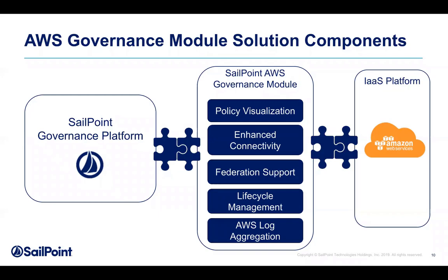In a nutshell, this is what the governance module handles. It's a policy visualization — we actually have the ability to crawl the policies inside the tool and see who they impact, how they impact, and what limitations they are. There's enhanced connectivity, tying this platform in with a log. Support for federation, because often users are created in other applications and then consumed by AWS. And then our basic lifecycle management — the joiner, mover, leaver scenario — applying that inside the AWS world.